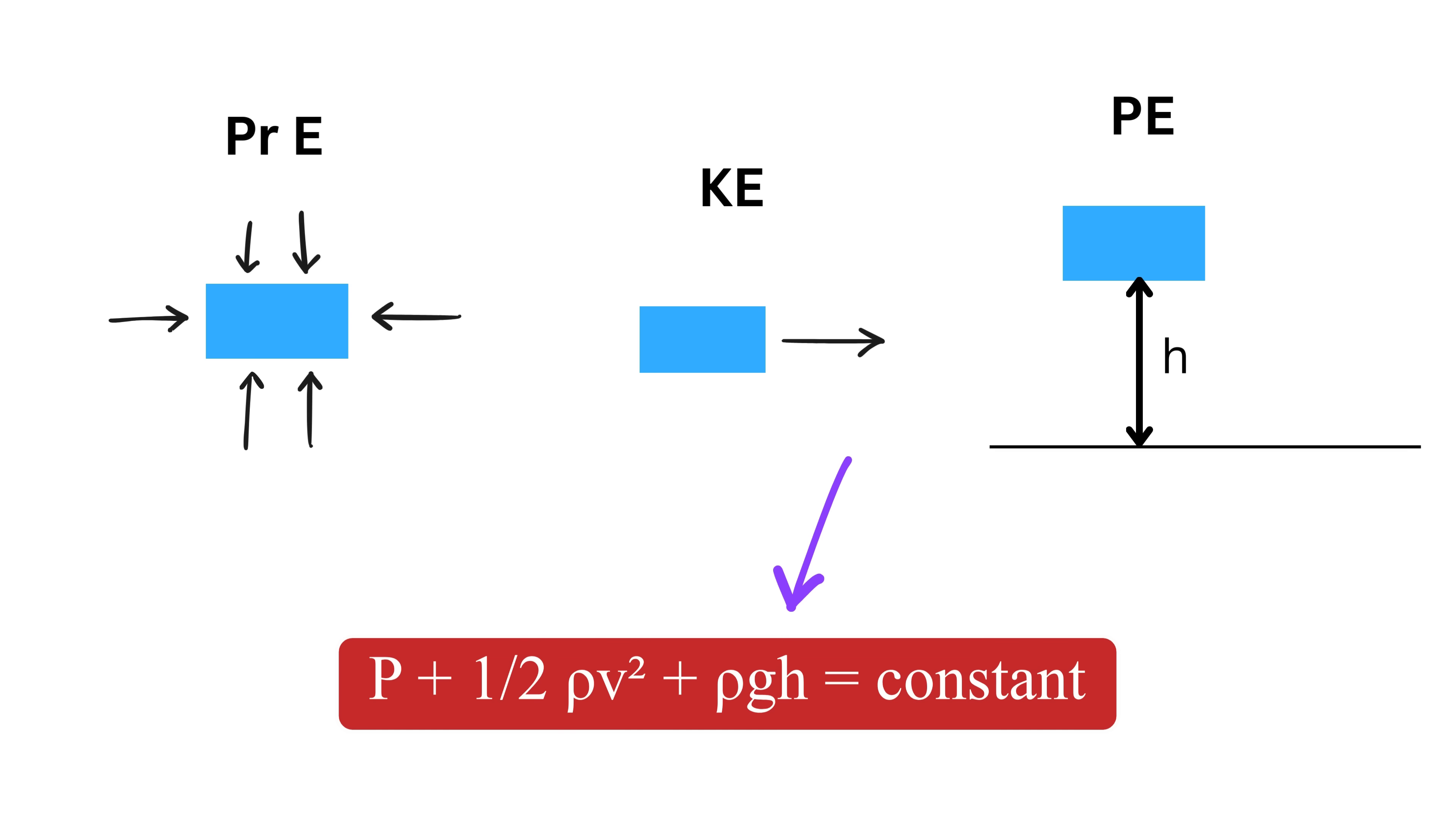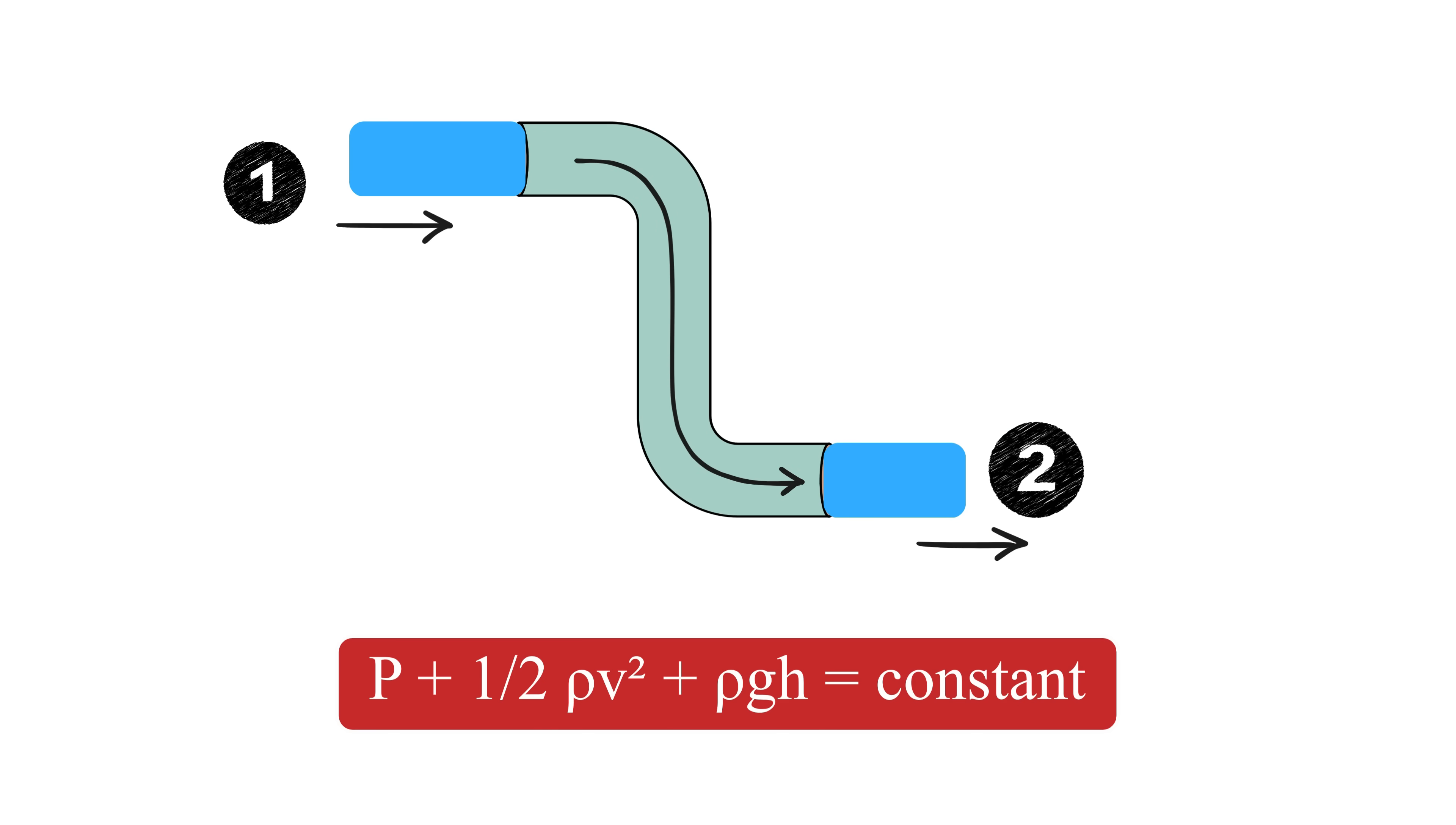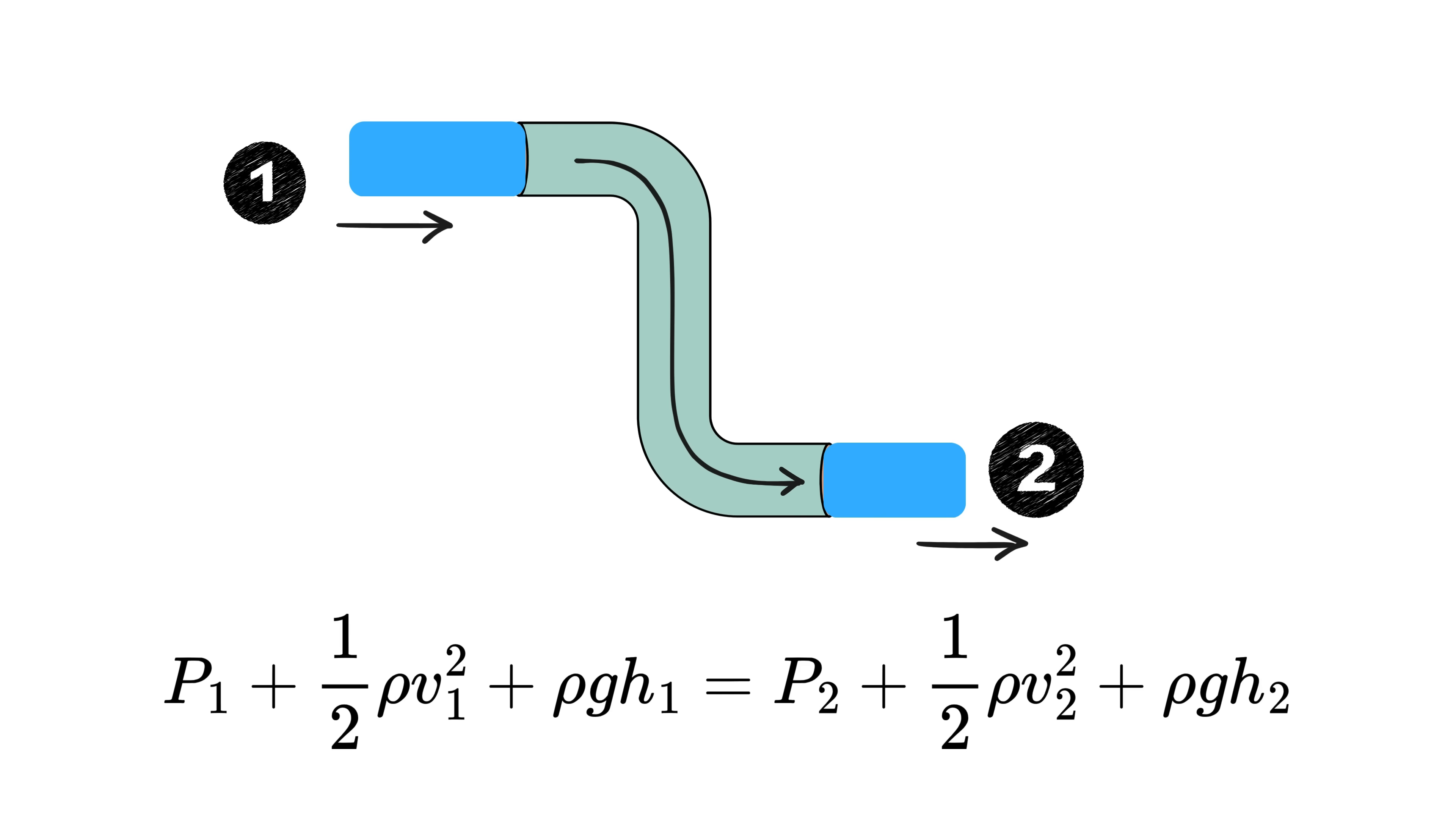This equation basically says pressure energy plus kinetic energy plus potential energy remains constant. You can pick any two points in the flow and apply this equation, and then equate them at those two points to relate what's happening.